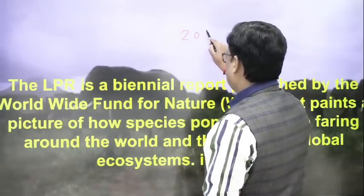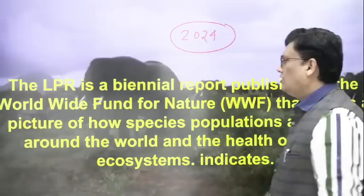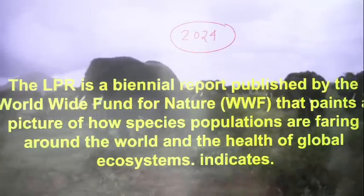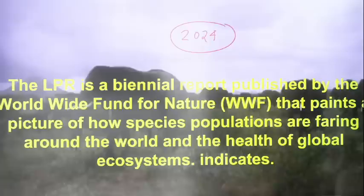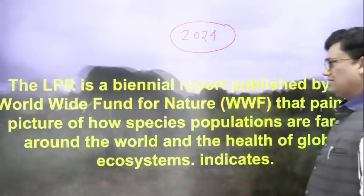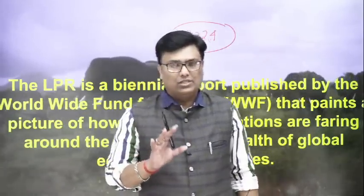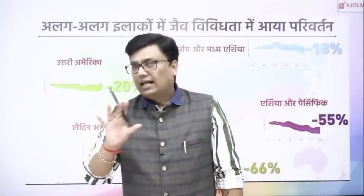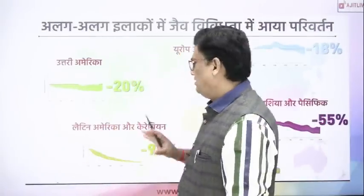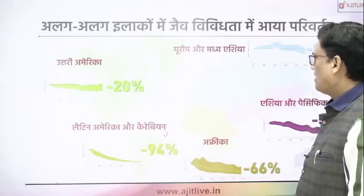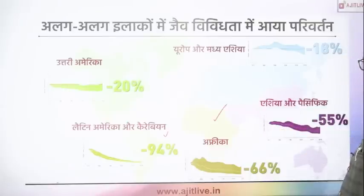This is a biennial report; the next report will come in 2024. The LPR is published by WWF — World Wide Fund for Nature — and paints a picture of how species populations vary around the world and indicates the health of global ecosystems. Latin America and the Caribbean have seen a 94% decline, Africa 66%, and Asia Pacific 55%.